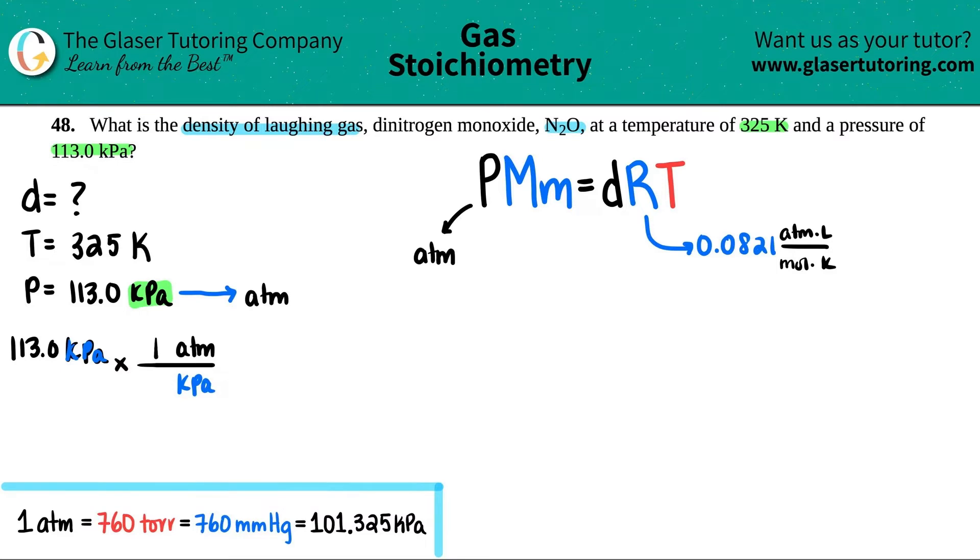For every one ATM, one atmosphere, there is 101.325 kilopascals. Whoa. Half of the K went. There we go. Cancel out kilopascal. And now let's just calculate what the ATM would be.